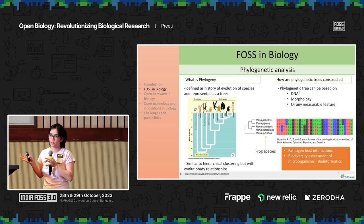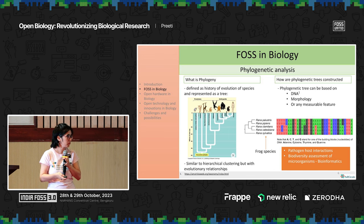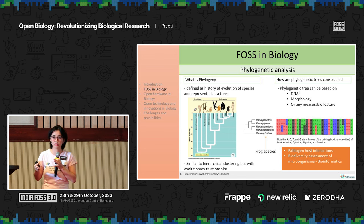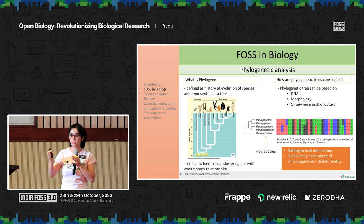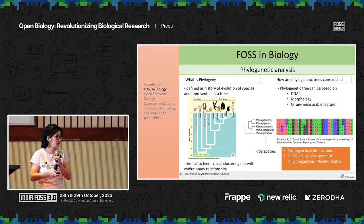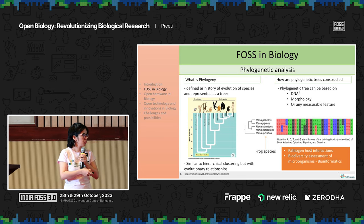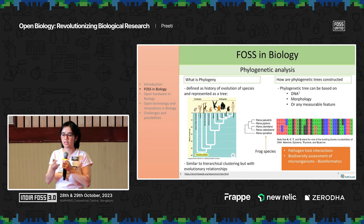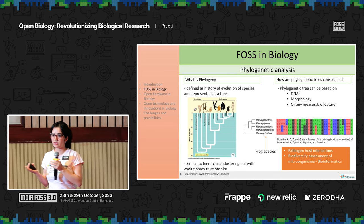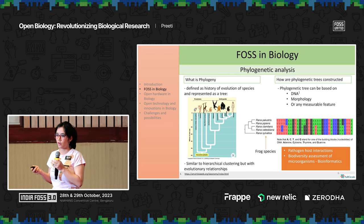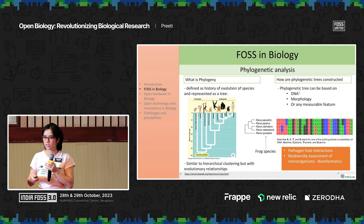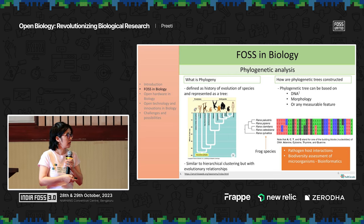Is phylogenetic analysis only specific to ecology and evolution? No. You can use this analysis for pathogen-host interactions, where you can track how pathogens have moved from one species to another and identify which are the susceptible species. It can also be used for biodiversity assessment of microorganisms. In bioinformatics, gut microbiota is a big thing right now, and to analyze their relationships, you build a phylogenetic tree.